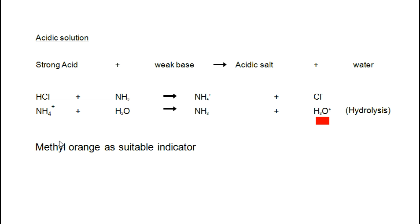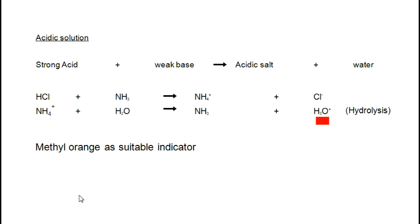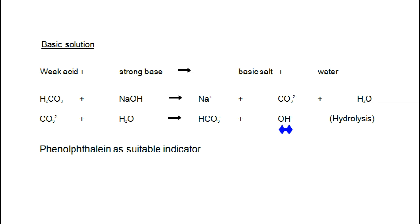In the case where a strong acid reacts with a weak base, an acidic salt and water are formed. HCl is the strong acid reacting with NH3, the weak base. NH4⁺ ions and Cl⁻ ions are formed. The NH4⁺ ions undergo hydrolysis — they react with water to form NH3 plus H3O⁺ ions. Because H3O⁺ ions are formed, the solution is acidic, and the suitable indicator is methyl orange.